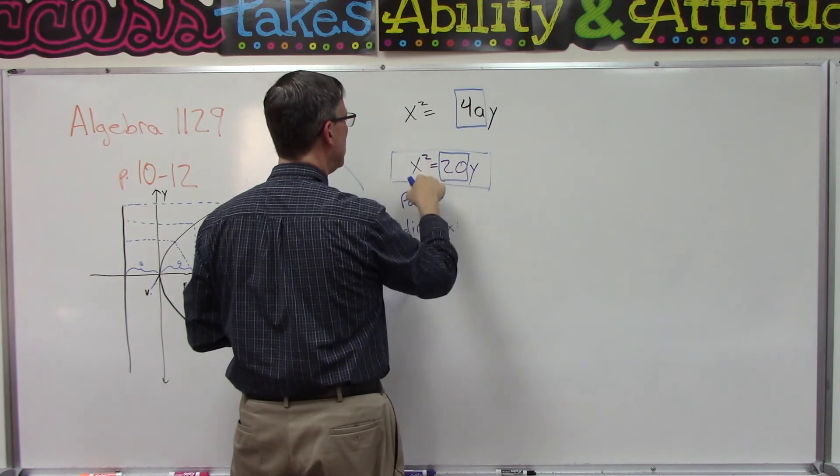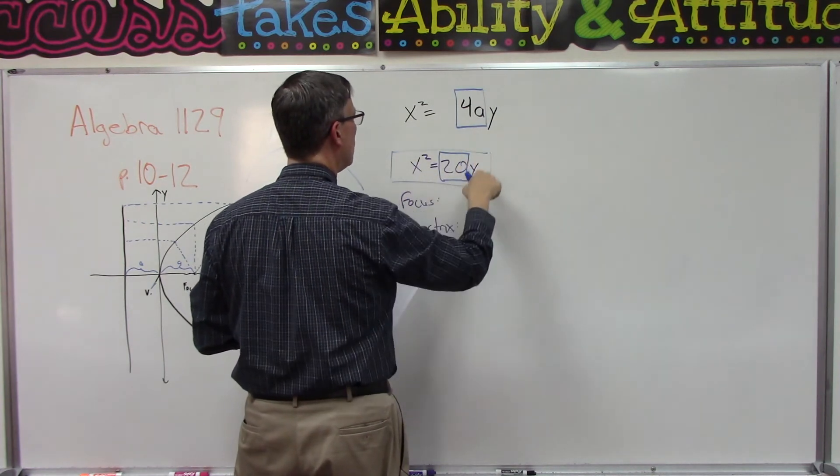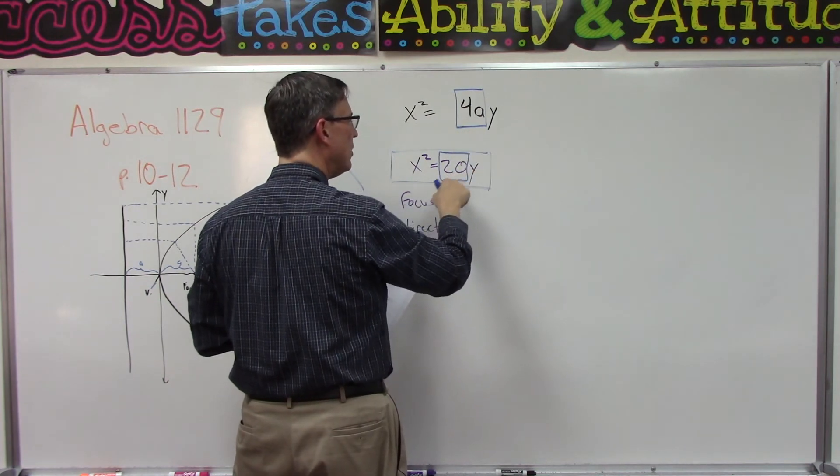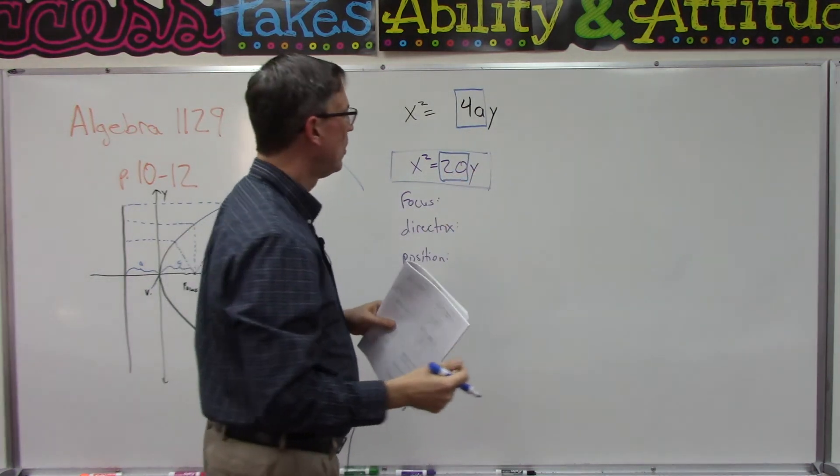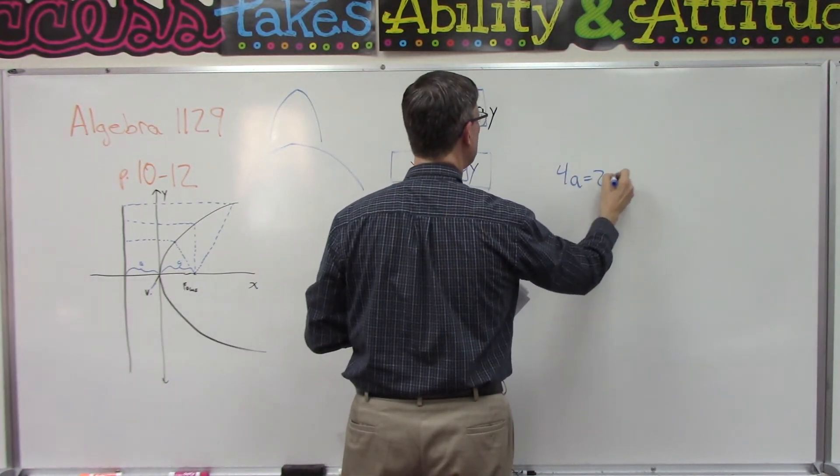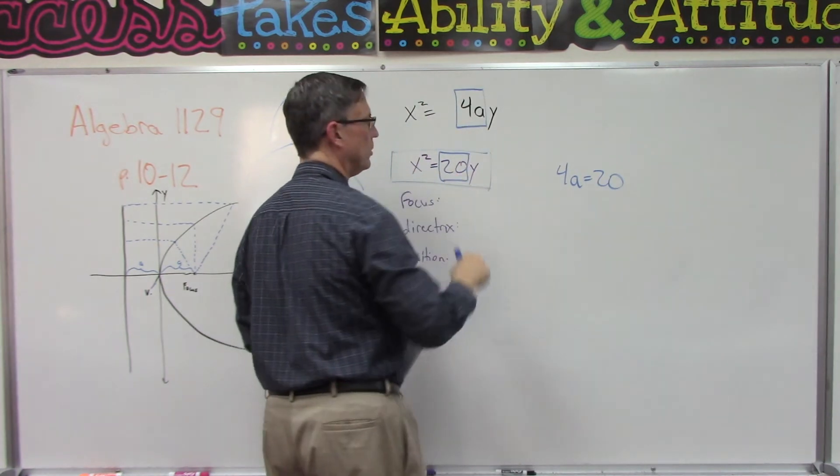Do you see how x squared equals y? And up here we have 4a and here we have 20. So what we need to do is kind of go over here and set these two things equal to each other: 4a must equal 20.